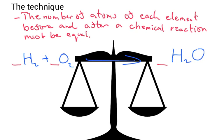Starting off, the technique: the number of atoms of each element before and after a chemical reaction must be equal. The reason why is because we can't make or destroy atoms. So in our example here I've got hydrogen plus oxygen goes to make water.